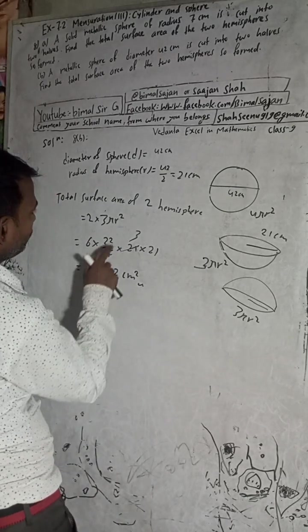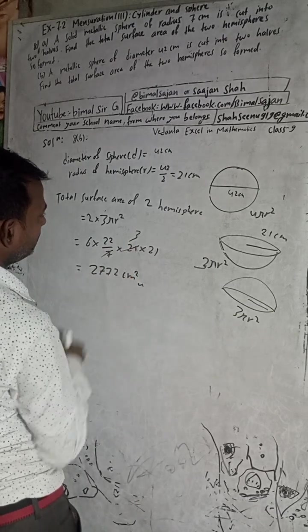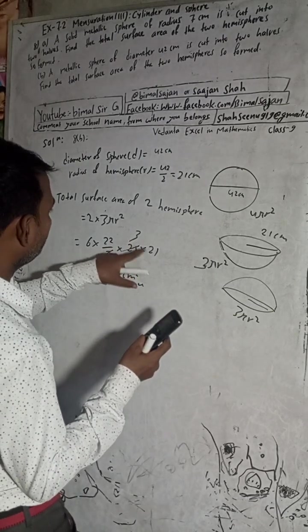The surface area is 3πr² for one hemisphere, which is 3 × 22/7 × r². For two hemispheres, it's 6 × 22/7 × 21 × 21.